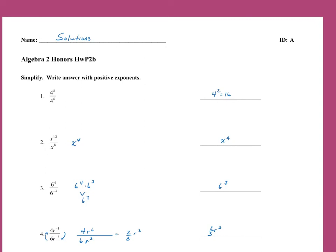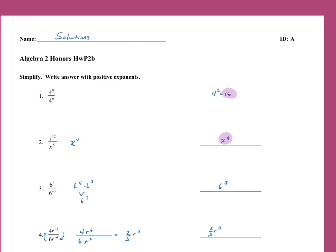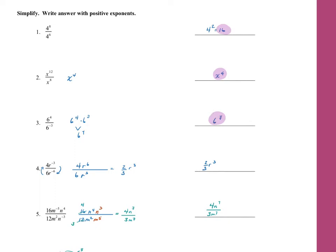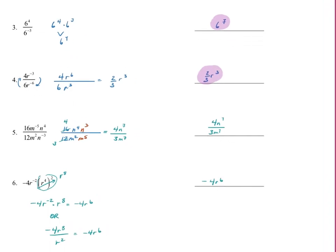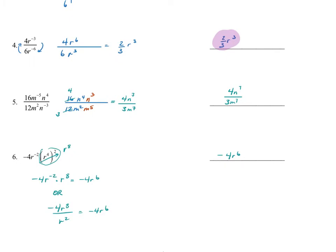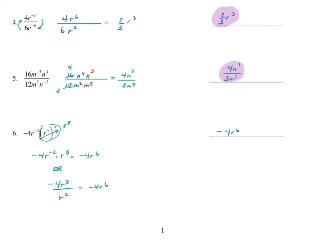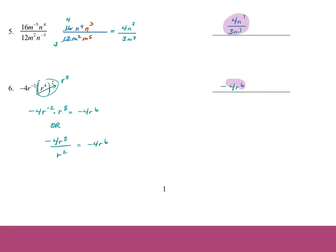So this is the homework from Friday. Number 1 should have been 4 to the 2nd, or 16. Number 2, x to the 4th. I'm going to read them out loud — if you're on iPad and have to split your screen, you can jump into Notability and check them. Number 3 is 6 to the 7th — you don't need to work that one out; anything over the 4th power you probably won't have to work out, but you could use a calculator. Number 4 is 2/3 times r to the 3rd power. Number 5 is 4n to the 7th over 3m to the 7th. Number 6 is negative 4r to the 6th.